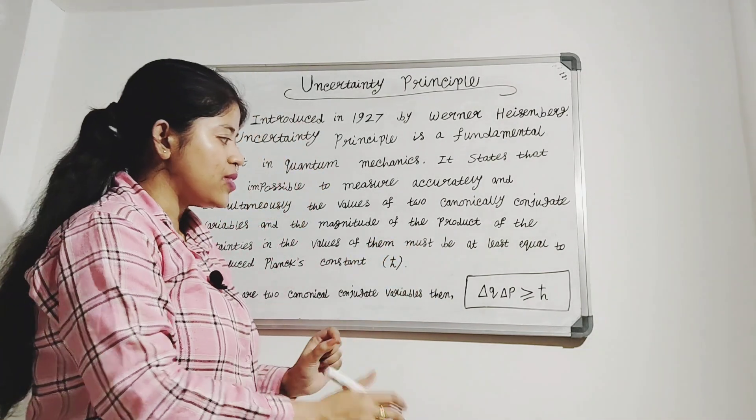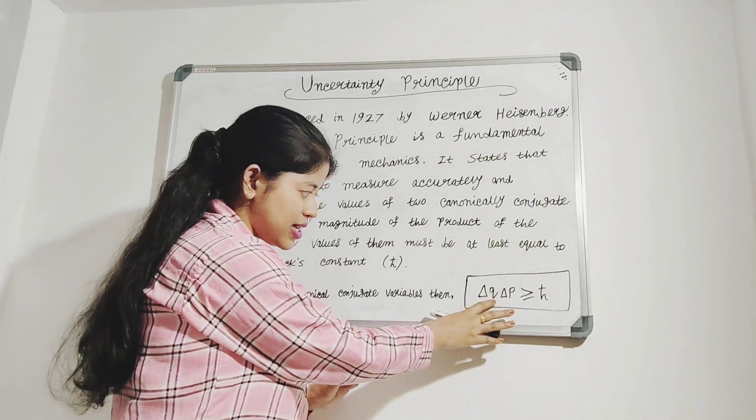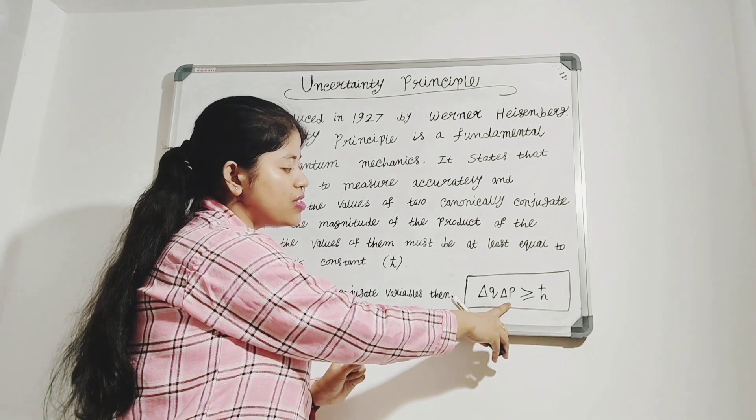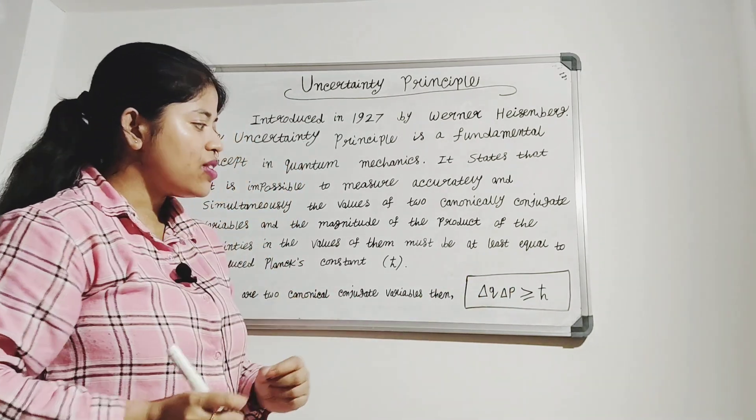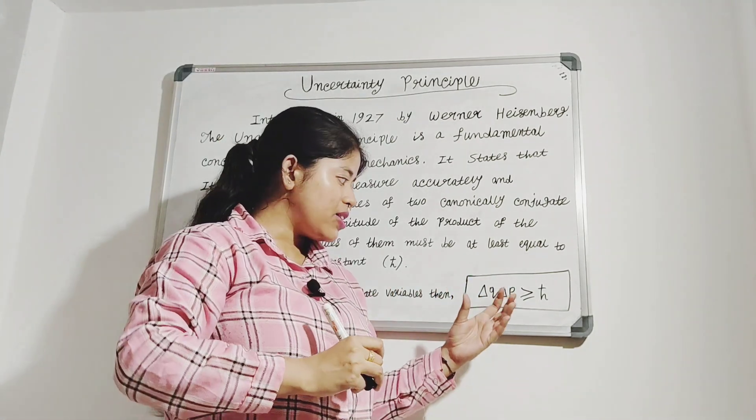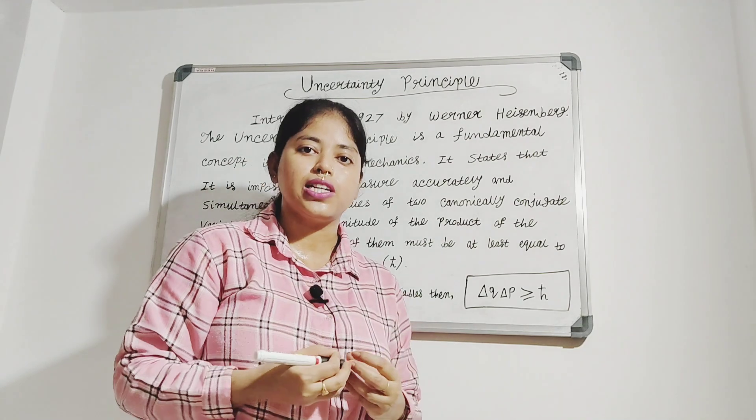That means the more accurate the value of delta q, the less will be the accuracy of the value of delta p. You cannot measure p and q simultaneously and accurately.